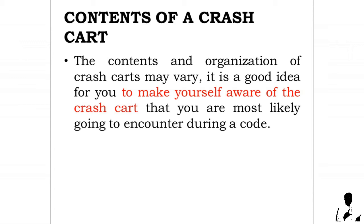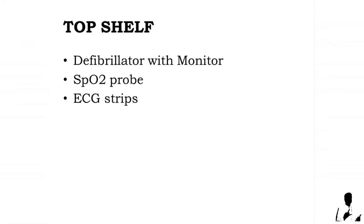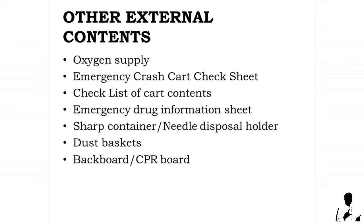The major parts of the crash cart are the top shelf and the drawers. On the top shelf you can find: a defibrillator with monitor, SpO2 probe, and ECG strips. Other external contents include: oxygen supply, an emergency crash cart checklist of cart contents, emergency drug information sheets, a sharps container and needle disposal holder, dust baskets, and a backboard or CPR board.